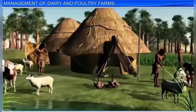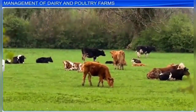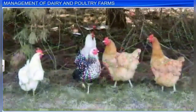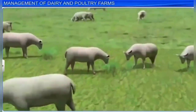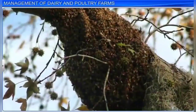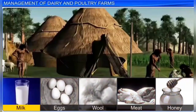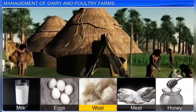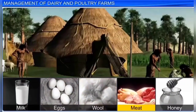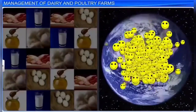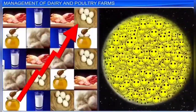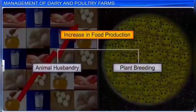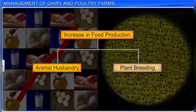Human beings have always been dependent on animals such as cattle, birds, pigs, sheep, and bees for products like milk, eggs, wool, meat, and honey. With an increase in population worldwide, an increase in food production is also required. This can be achieved through animal husbandry and plant breeding.